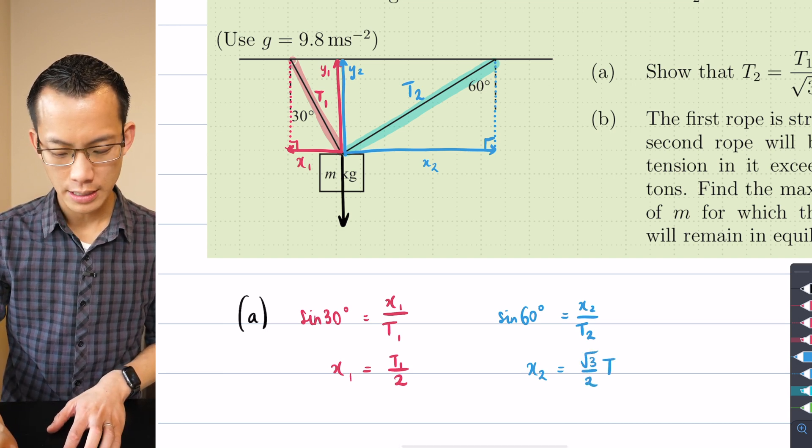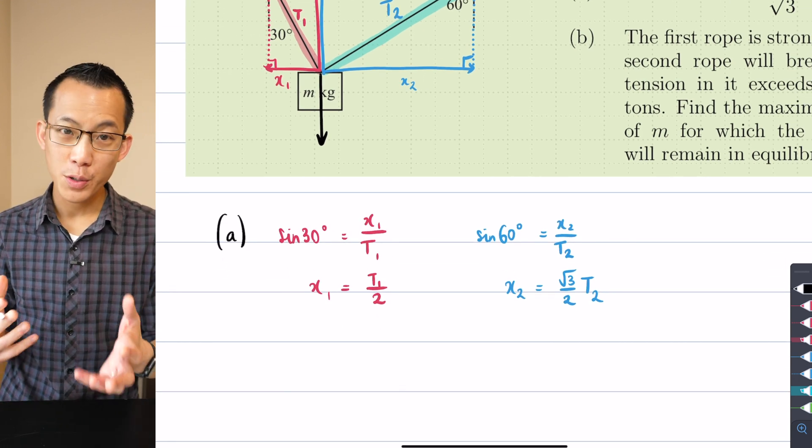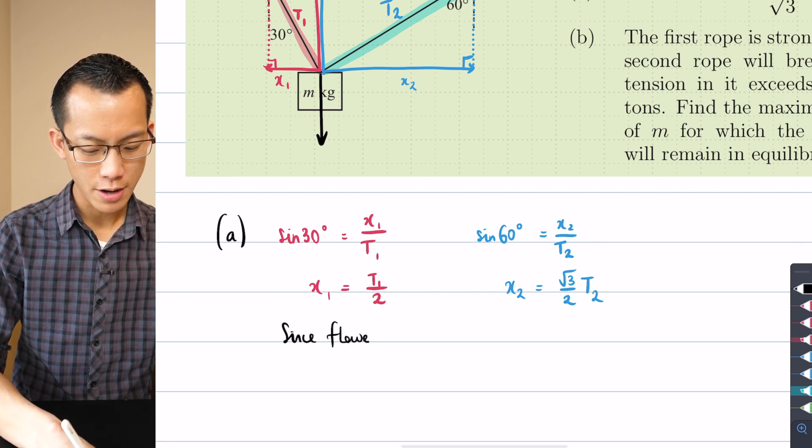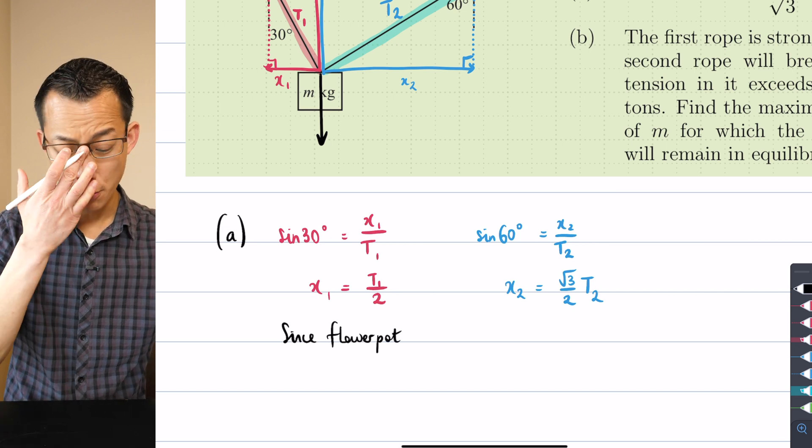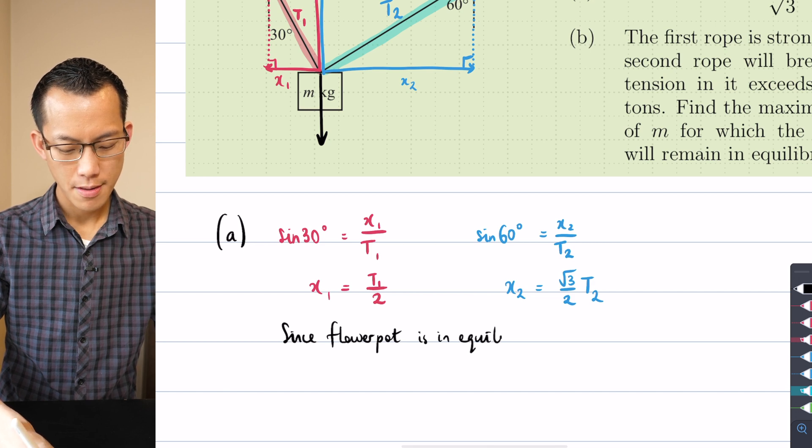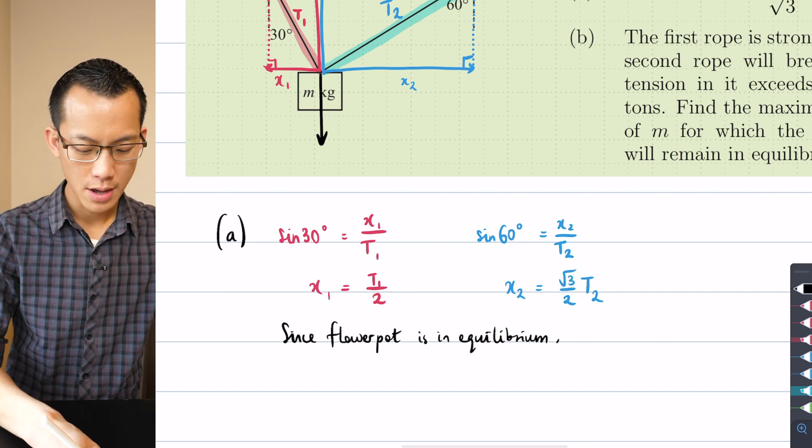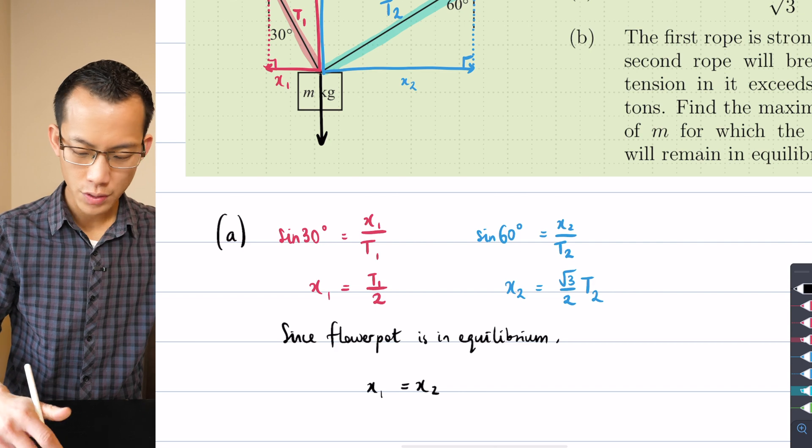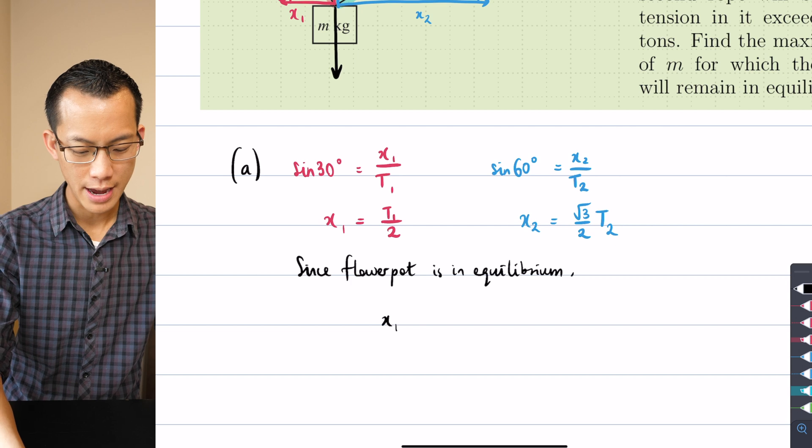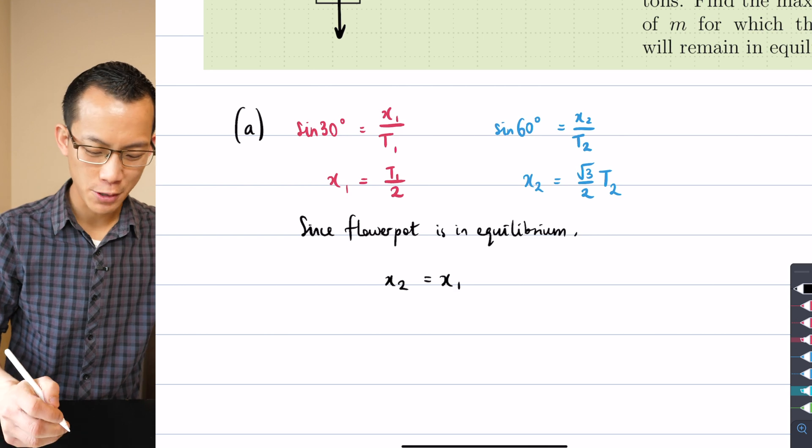Okay, at this point here I know that these two things are in balance so I'm going to say since flower pot is in equilibrium, I think this sort of verbal reasoning is really important not to skip over. Since it is in equilibrium I can equate these horizontal forces because they're opposing to each other. I can say x1 equals x2. In fact looking at the way they've stated the question in part a I'm going to go one better and say x2 equals x1 because I do want T2 as the subject.